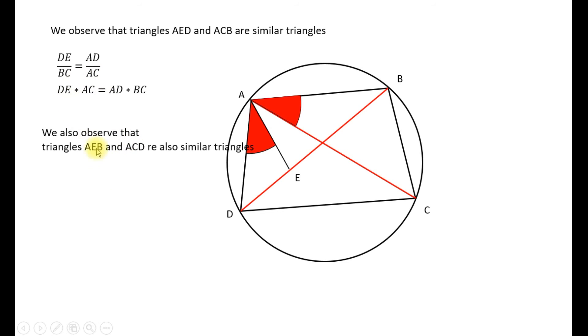Now if we write the same equations for the ratio of corresponding lengths we can write EB divided by DC is equal to AB divided by AC. We cross multiply.